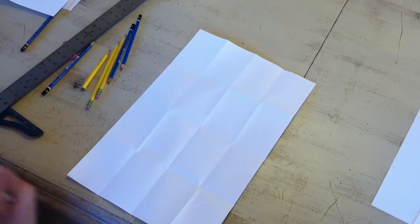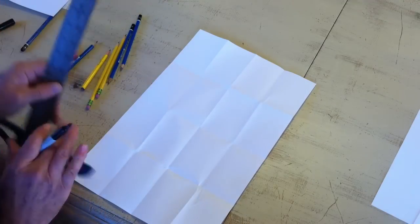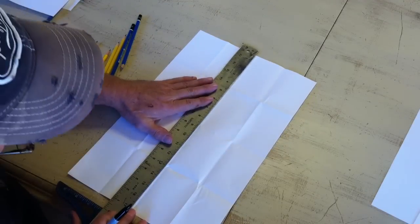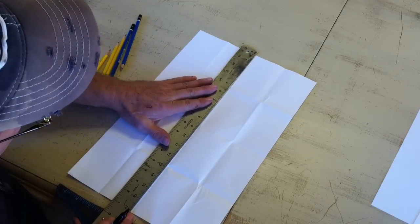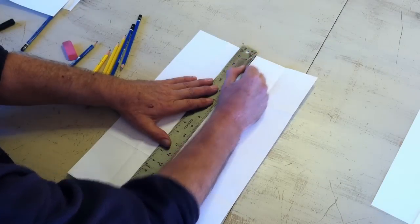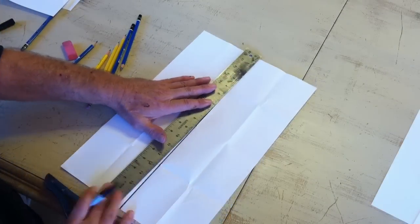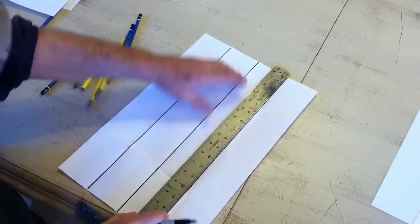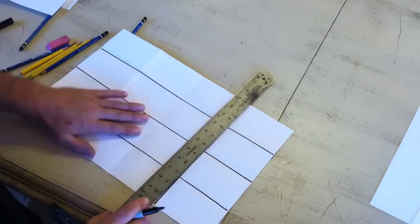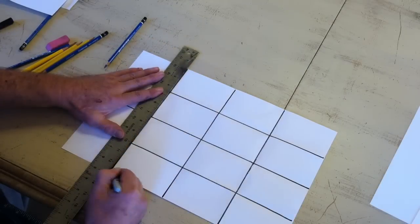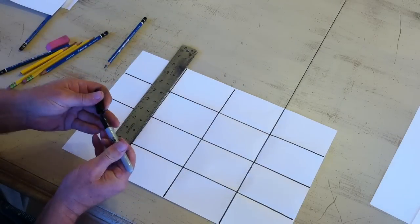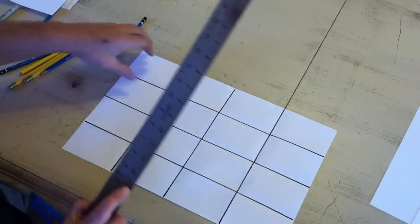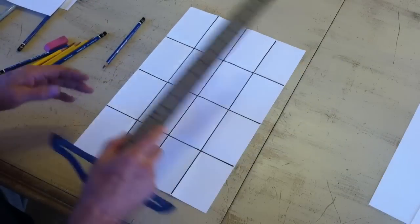I'm going to take my ruler and black marker. I'll clarify these lines. 16 squares. Rectangles actually.